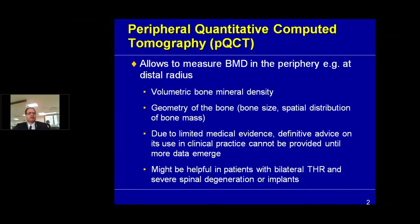Peripheral quantitative CT is a variant that allows measurement of bone density at peripheral sites like the radius. It is a volumetric measurement that determines the geometry of the bone. It is still in earlier stages and we need more clinical practice to understand its use in various clinical scenarios. It can be useful in scenarios where we have implants in the spine or hip, where doing the usual BMD using DEXA is difficult.